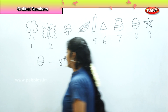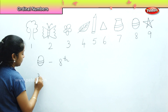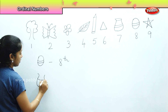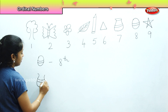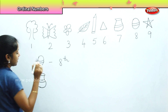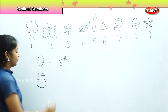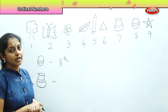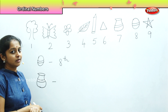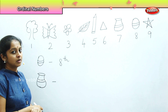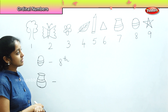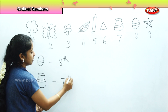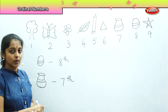Now if I tell you I want to know the position of the pot which is placed on the board — what is the position of the pot? Yes, it is kept on the 7th position.